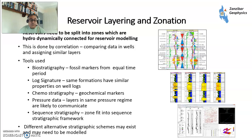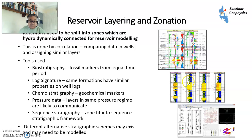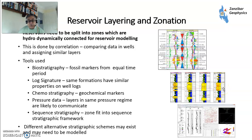A little bit about reservoir layering and zonation. Zonation is done by correlation — you're looking at logs, for example a gamma-ray log, where these are sand bodies and these are shale bodies, and you're trying to connect the different sand bodies to see which ones will talk to each other and flow together. You look at where the vertical barriers are. Various tools are used — stratigraphy using fossil markers, because these units are laid down over considerable lengths of time and each shale will contain different bio-units you can correlate. You can look at log signatures, chemostratigraphy for geochemical markers, and pressure data helps validate it — if one unit has a different pressure to another, obviously there's a barrier between them. You can also use sequence stratigraphy to fit everything into a sequence-stratigraphic framework.